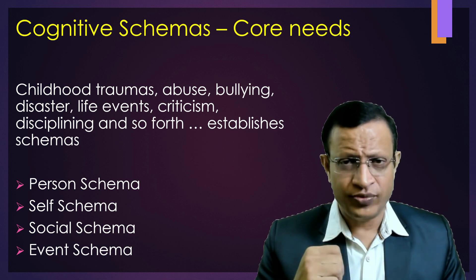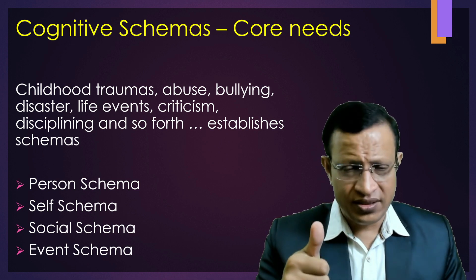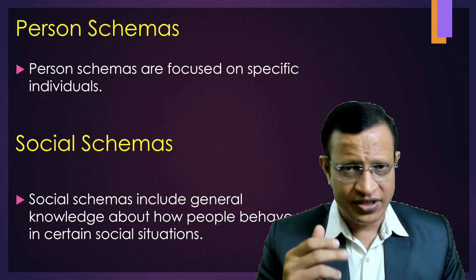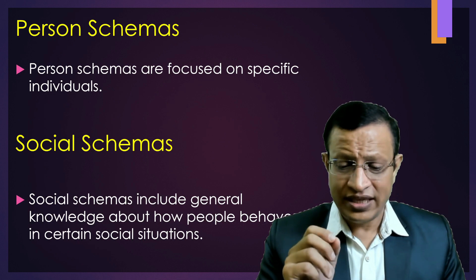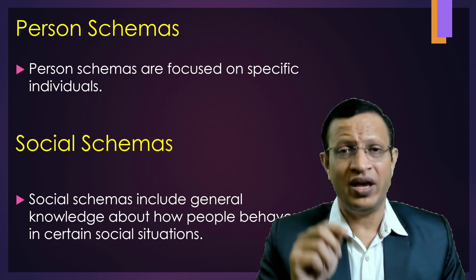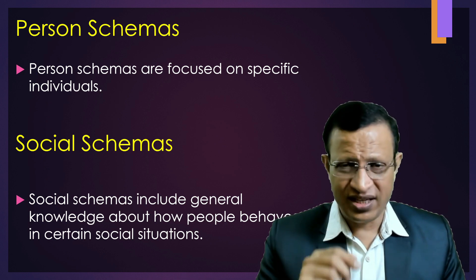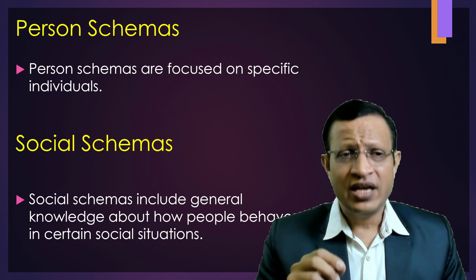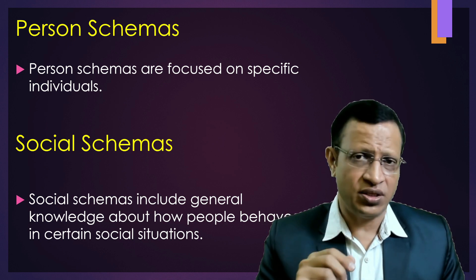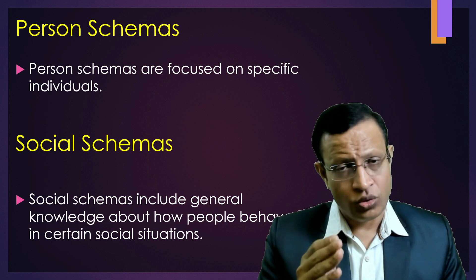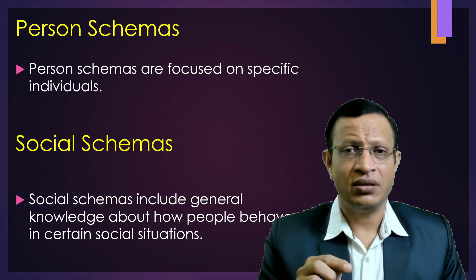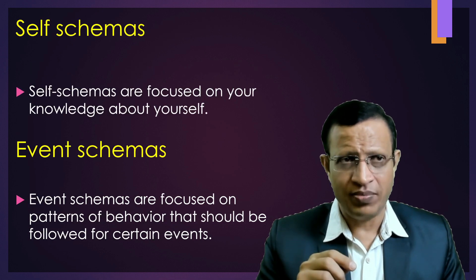There are four different types of schemas discussed in the literature. One is person schema — focused on particular people, expecting a certain person to behave in a certain way. Social schemas include general knowledge about how people behave in certain social situations — meaning in a particular social situation, we are expected to behave in a certain way, and if we don't, we are considered wrong.